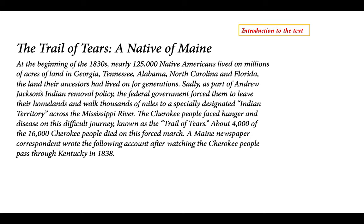At the beginning of the 1830s, nearly 125,000 Native Americans lived on millions of acres of land in Georgia, Tennessee, Alabama, North Carolina, and Florida — the land their ancestors had lived on for generations. Sadly, as part of Andrew Jackson's Indian removal policy, the federal government forced them to leave their homelands and walk thousands of miles to a specially designated Indian territory across the Mississippi River. The Cherokee people faced hunger and disease on this difficult journey known as the Trail of Tears.